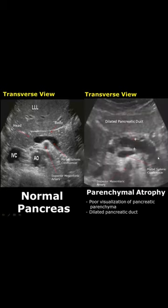Chronic pancreatitis may lead to atrophy of pancreatic parenchyma. We do not see much of the parenchyma of the pancreas — we don't really see the body or the head as much as we should.